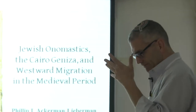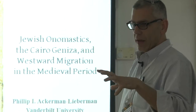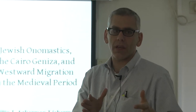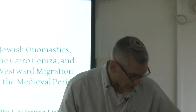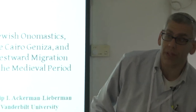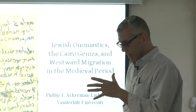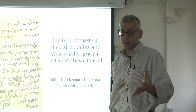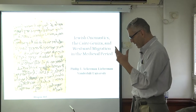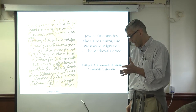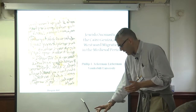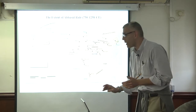What I want to do today is talk about the problem I'm engaging in my current book project, and specifically how I want to use onomastic data from the Cairo Geniza to address an aspect of the problem. Then I want to open it up for your input as experts in this area, because I am a social, economic, and legal historian, and onomastics is moving me a little bit out of my area. Let's talk about what the problem is.